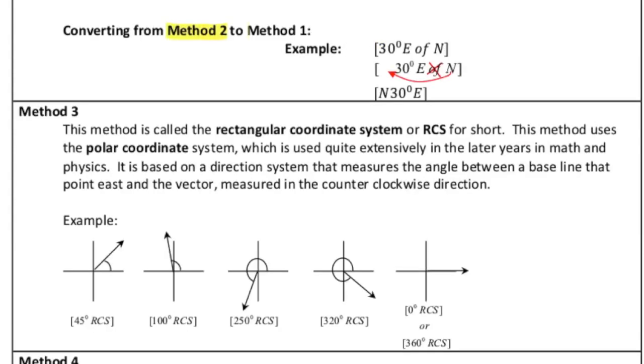That being said, here's how you can convert from method two to method one. You take the original notation that they have here, 30 degrees east of north. Essentially, what you do is you eliminate the of, and then you take the north and drag it out front. And then you get the exact same notation that we had before. It's a fairly easy process to convert from this notation to this one.